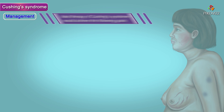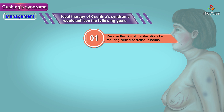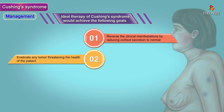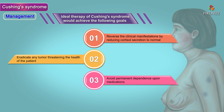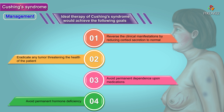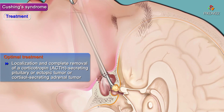Management of Cushing's syndrome. The goals of ideal therapy would achieve the following: reverse the clinical manifestations by reducing cortisol secretion to normal, eradicate any tumor threatening the health of the patient, avoid permanent dependence on medications, and avoid permanent hormone deficiency.